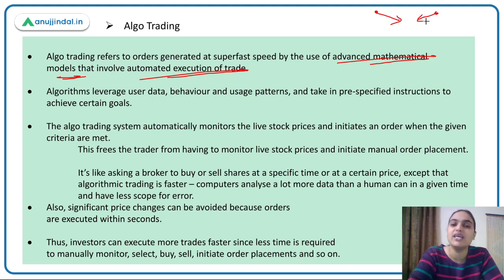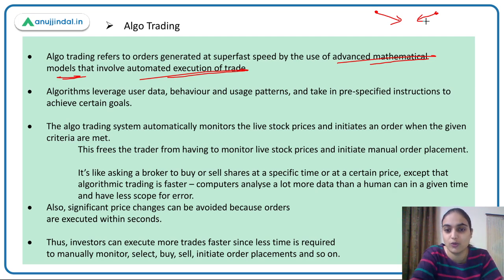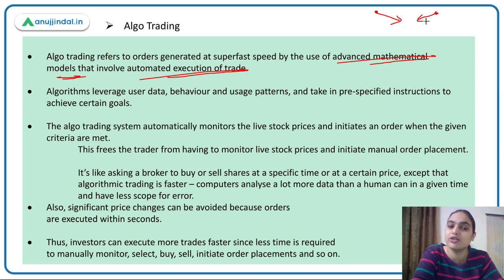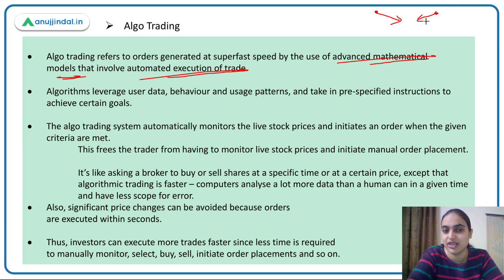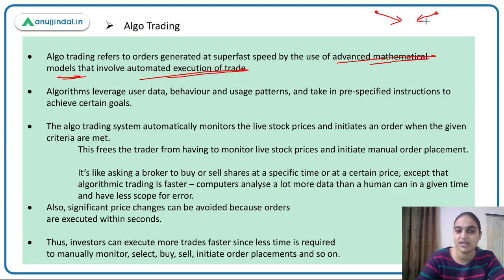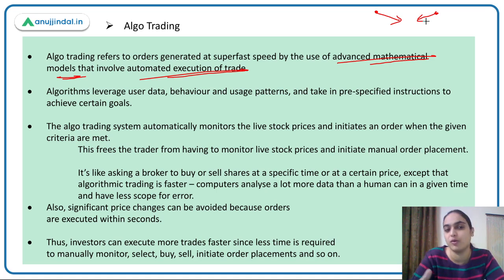With algo trading, you don't have to manually track prices or manually initiate orders. A software or mathematical model tracks the prices, and when the price comes within your desired range, the order is processed automatically. It's essentially like asking a broker to buy or sell shares, but instead of the broker doing things manually, the mathematical model performs the operations.